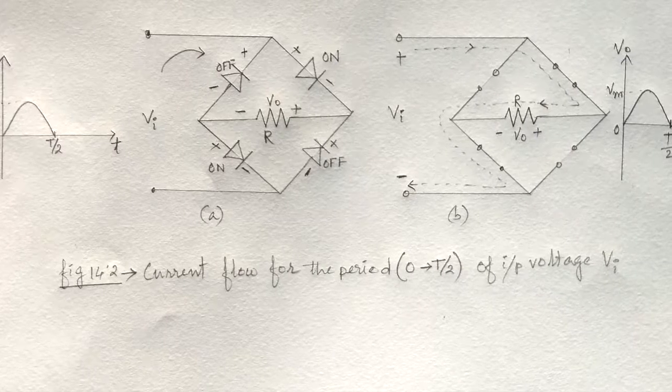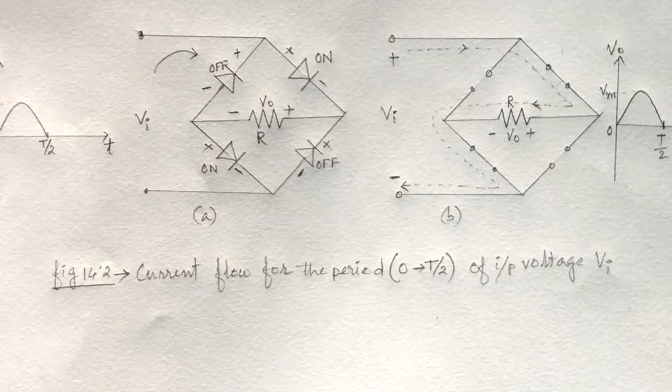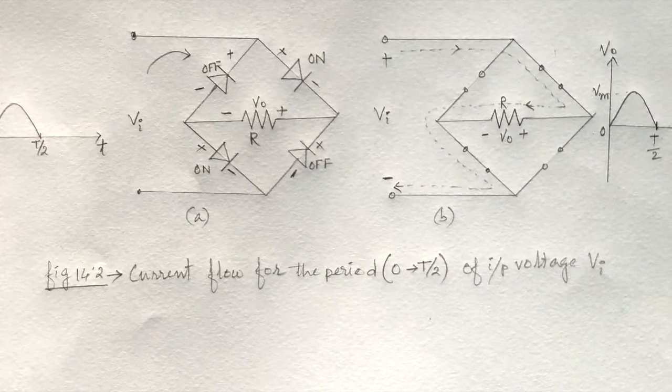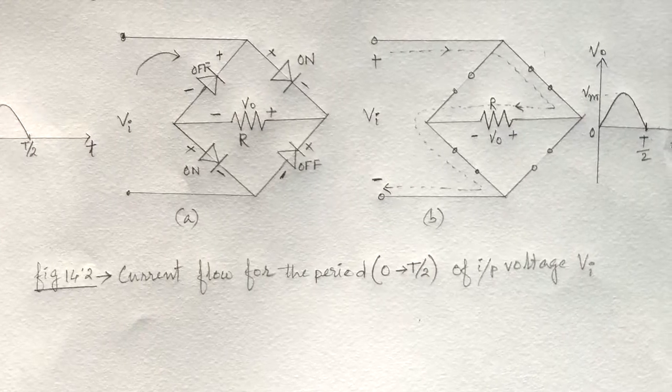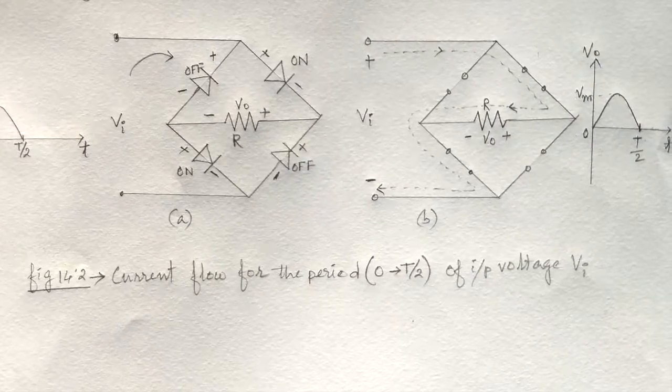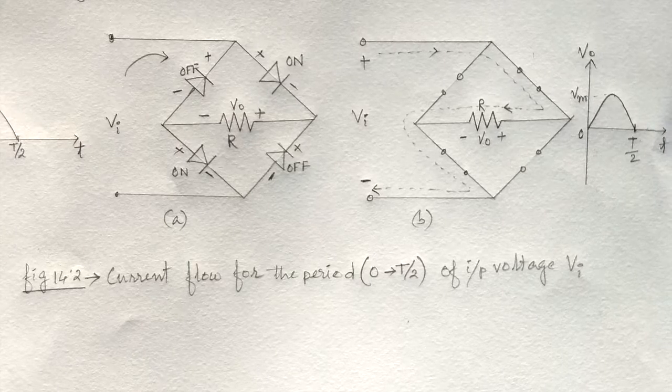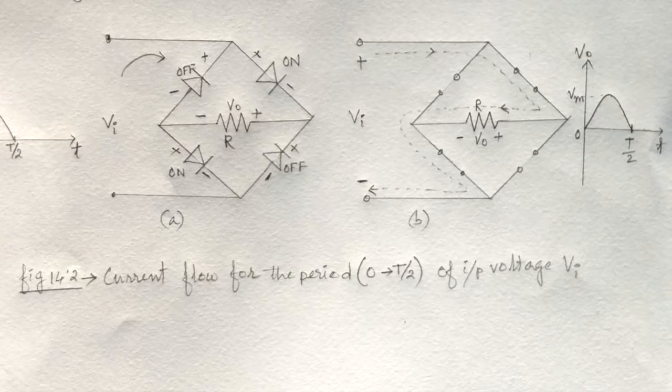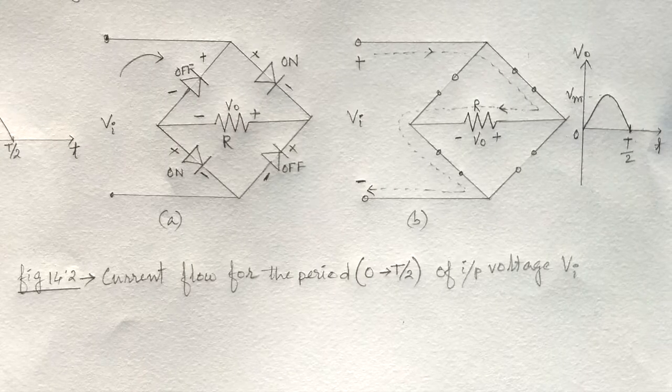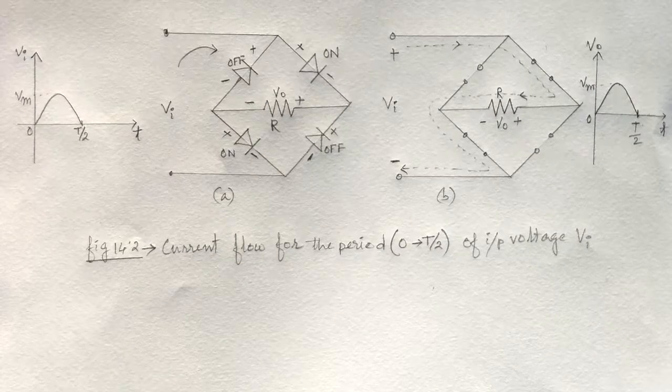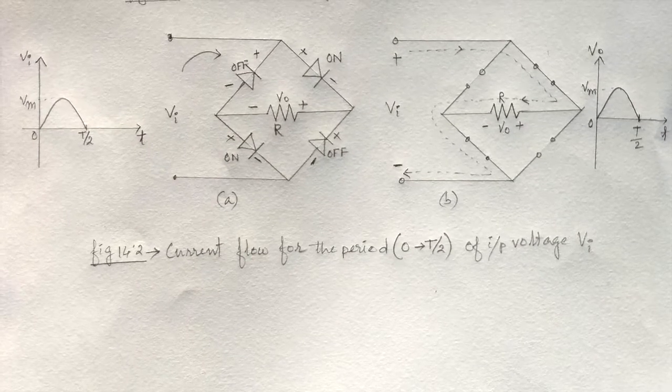Assuming the diodes to be ideal, D2 and D3 act as short circuit, and D1 and D4 act as open circuit. The current flow path is as shown by the dotted line. Therefore the voltage across the load, capital R, is equal to input voltage. The input and output waveforms are also shown in this figure.